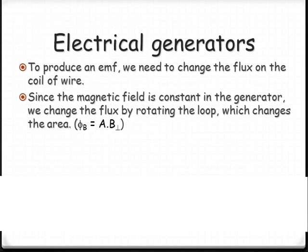The magnetic field is going to be constant in the generator. So in order to change the amount of flux, we rotate the loop. This is going to change the amount of area that the flux is passing through, and therefore the magnetic field is passing through, and therefore change the flux.